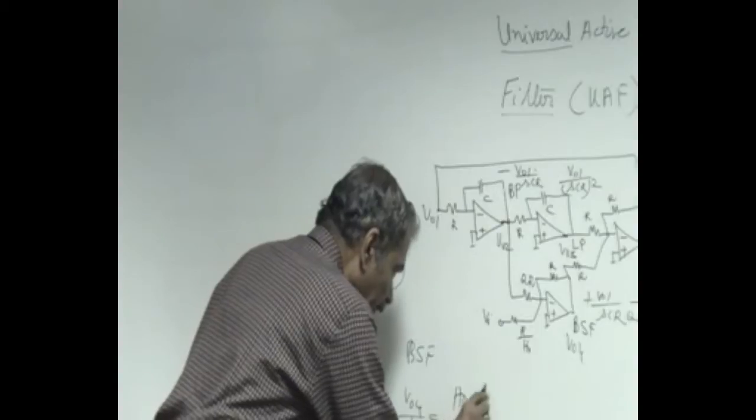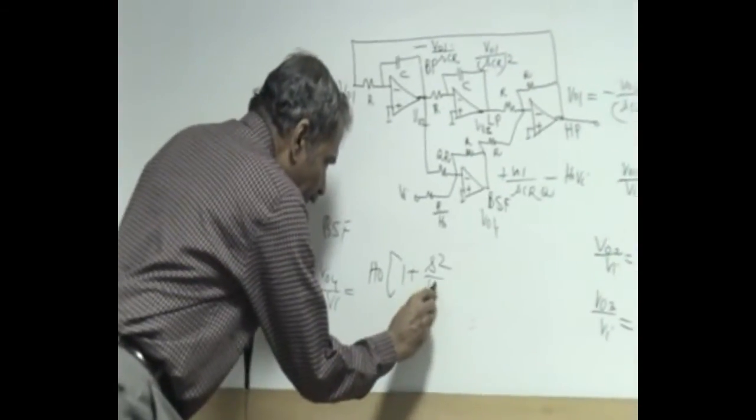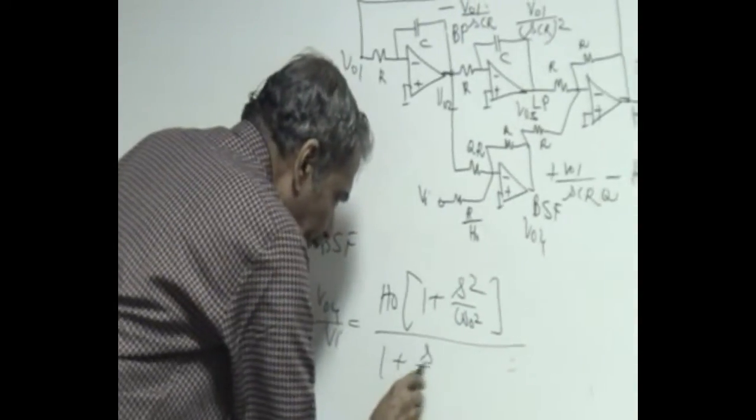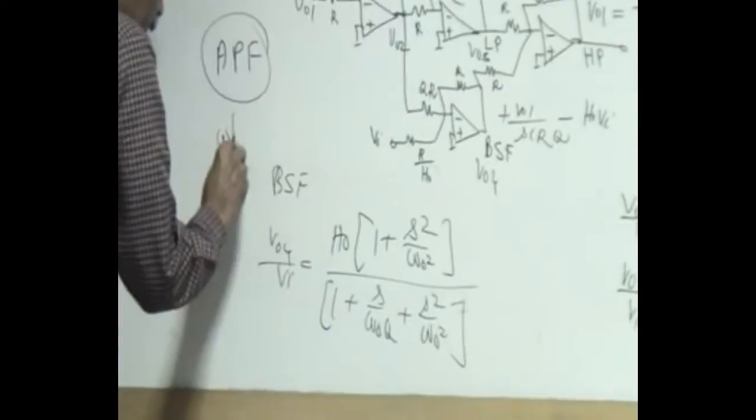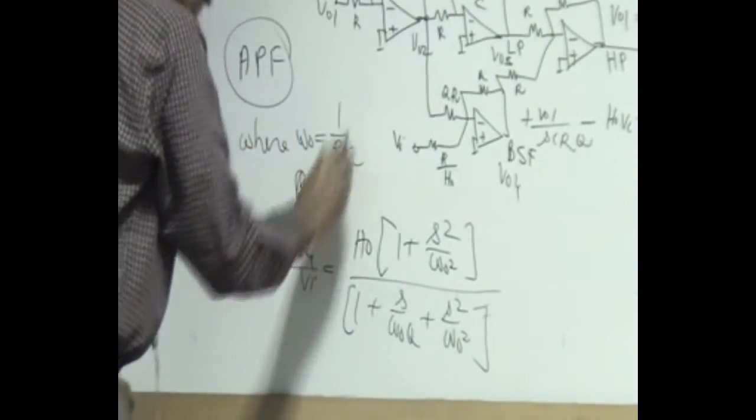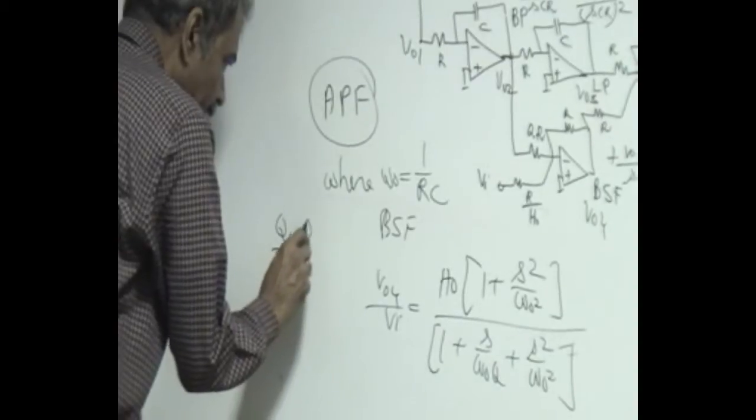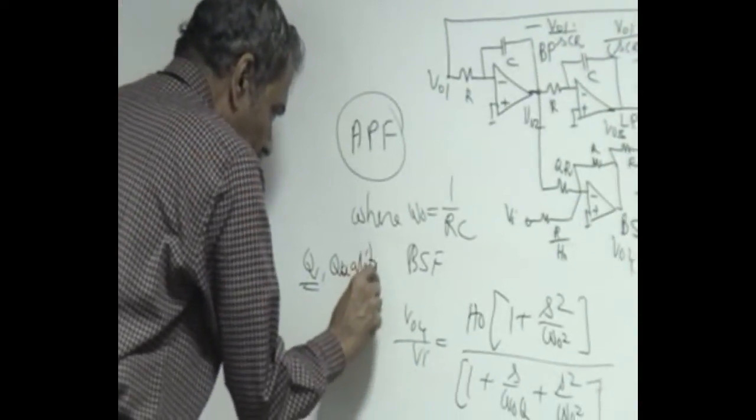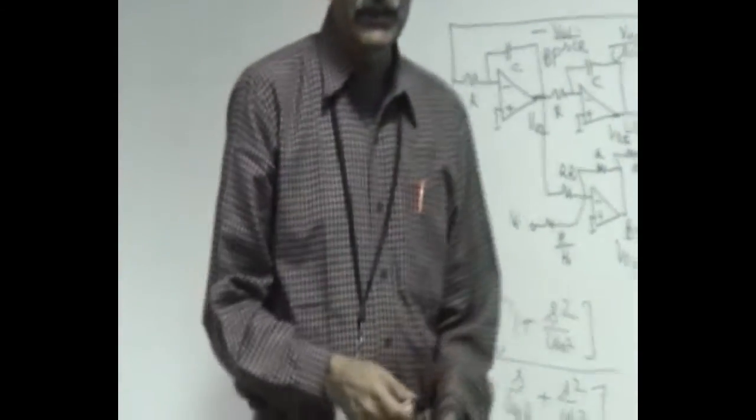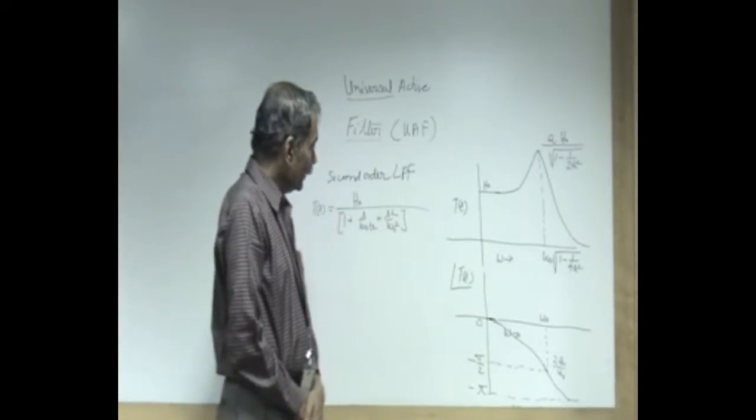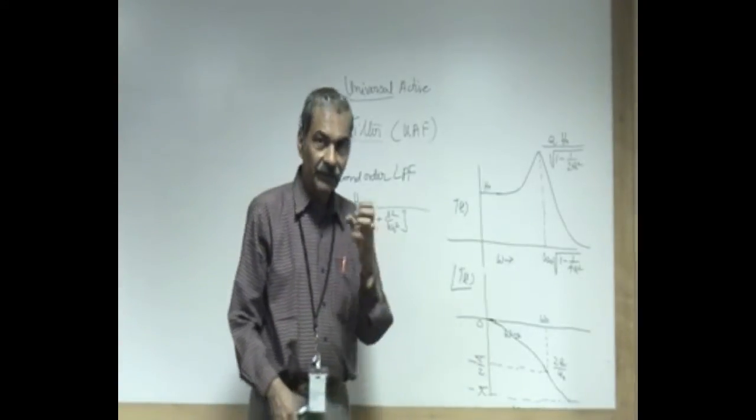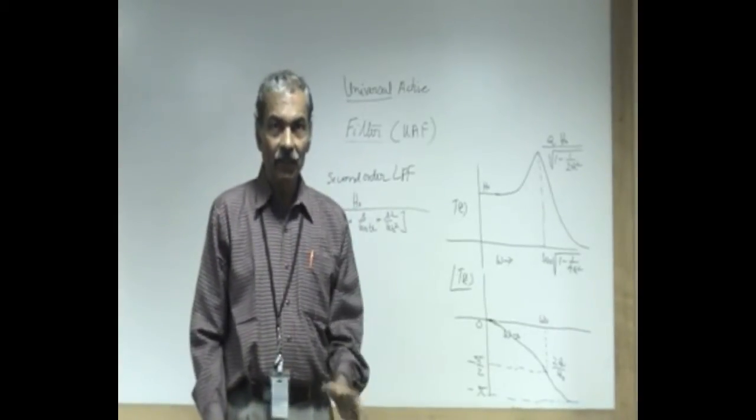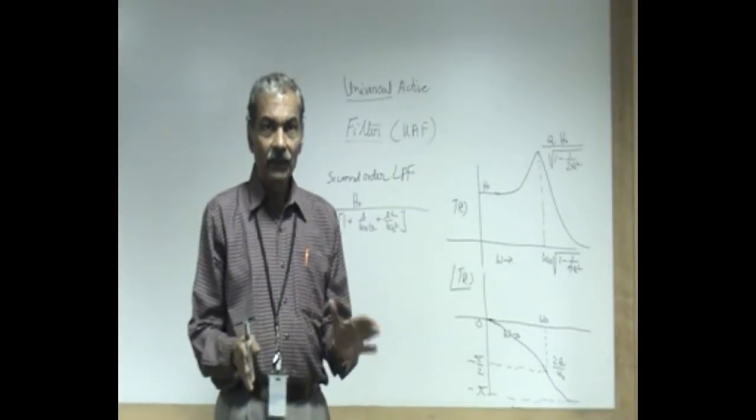This output of band stop is 1 plus S square by omega naught square with 1 plus S by omega naught. Omega naught is 1 over RC it can be changed by changing R and C and Q is the quality factor or the poles of the system. Now that you have understood the circuit we can give us a general second order system which is called universal active filter because of its ability to simulate any second order with poles always on the left half plane and zeros anywhere on the S plane.